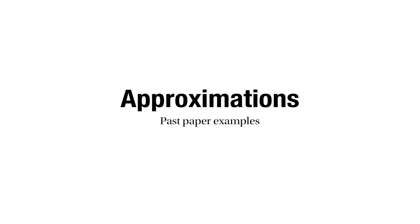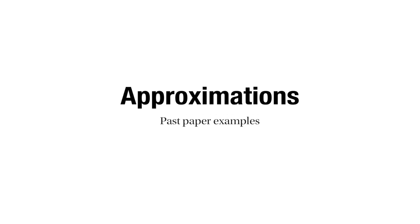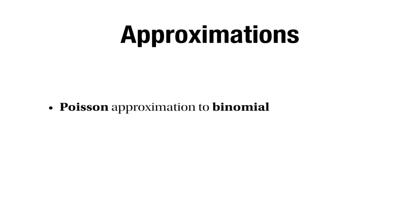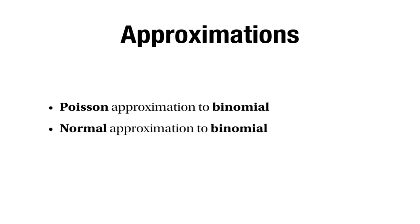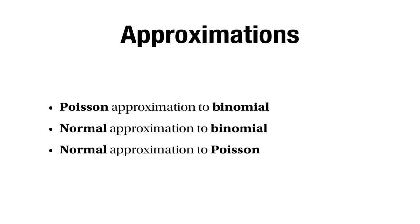This is a video looking at some past paper questions on approximations. There are several types of approximation that you're expected to be able to do. First, there's the Poisson approximation to a binomial distribution. Second, a normal approximation to a binomial distribution. And thirdly, a normal approximation to a Poisson distribution.